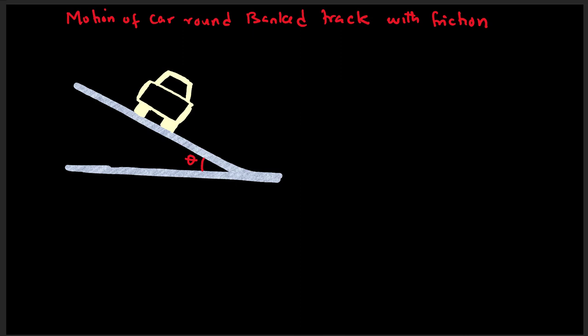The first case we will look at is when the speed of the car is less than the critical speed. This means the car has a tendency to skid inwards. As a result, the road will exert a friction force outwards to prevent the car from skidding inwards.